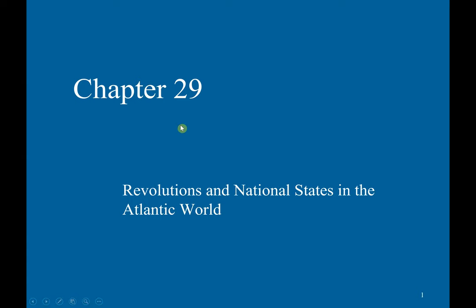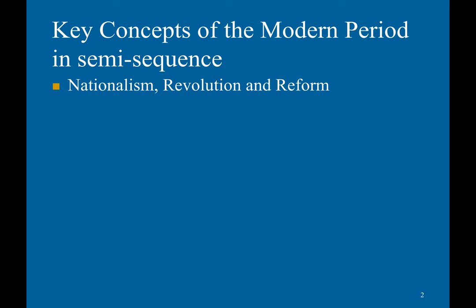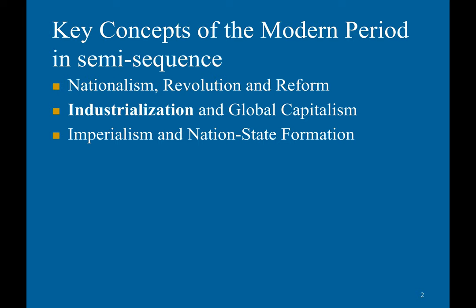This video refers to Chapter 29, Revolutions and National States in the Atlantic World. The key concepts of the modern world — the modern period — were nationalism, revolution, and reform, industrialization and global capitalism, imperialism and nation-state formation, and global migration.